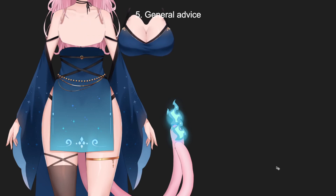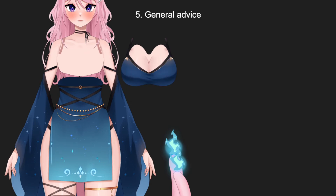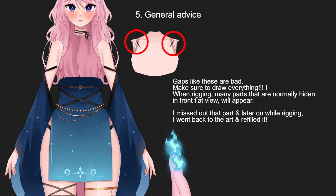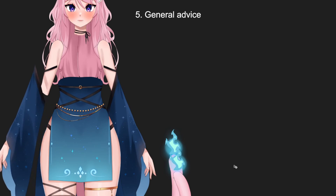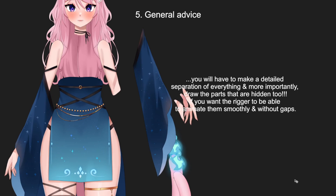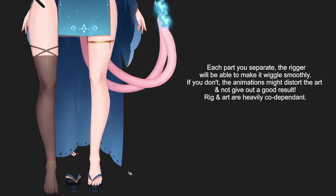The general advice to remember from this video: always separate layers into left and right when needed — for example, I left the upper parts of the clothes in the same layer when I should have separated them, and that's a mistake. Another common mistake is gaps — always draw everything and fill any gaps, even if something is hidden in the flat front view, because it will appear when animated. For clothes, they heavily depend on the design, but if you follow the general model separation advice from this video, you will be fine separating any design.